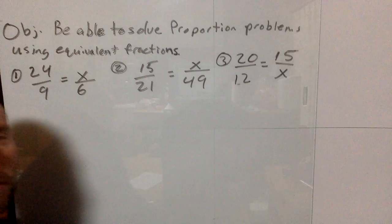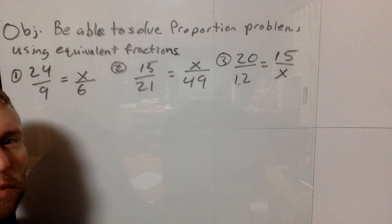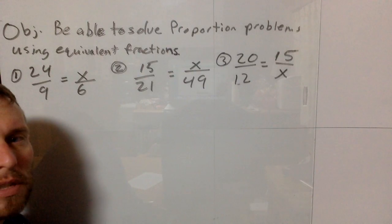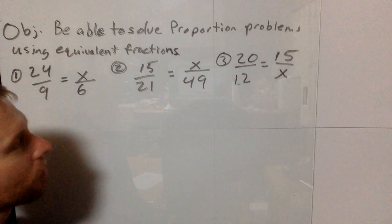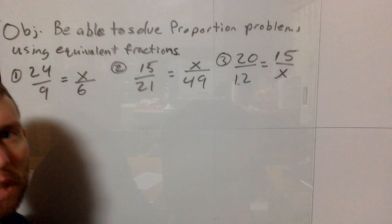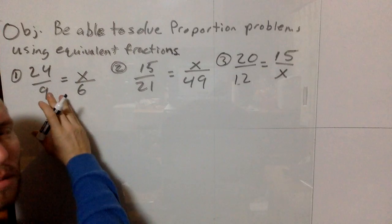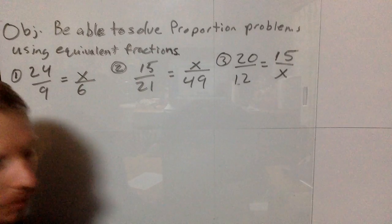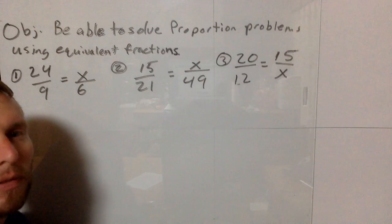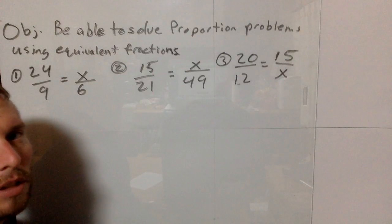First, let's look at number one: 24 over 9 equals x over 6. The first thing you should do when solving these proportion problems is, if you can, simplify the fraction or proportion that has both numbers. If you simplify it first, it will make the math easier later.